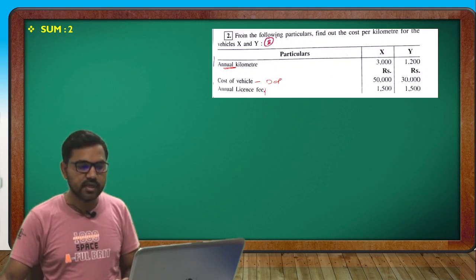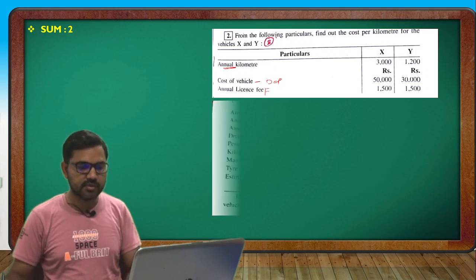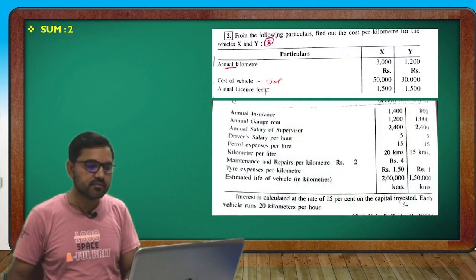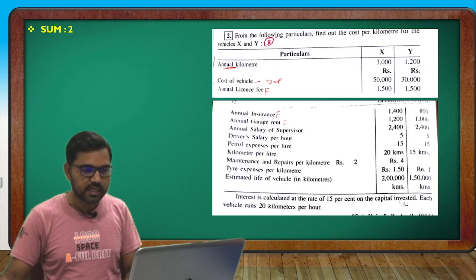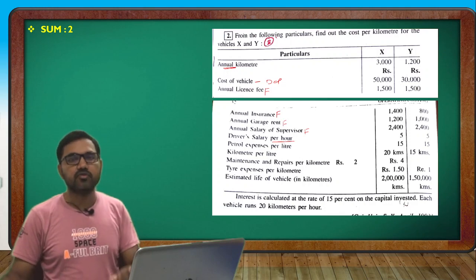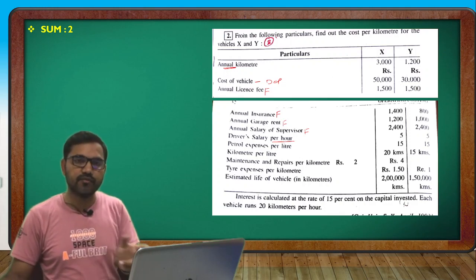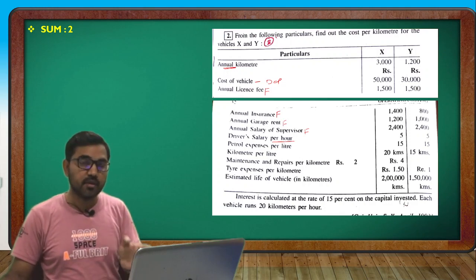Under fixed expenses we have: salary of supervisor, which is a fixed expense, and driver salary per hour. Driver salary per hour is fixed for each hour worked.